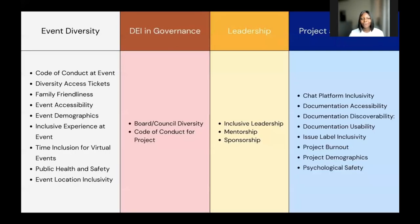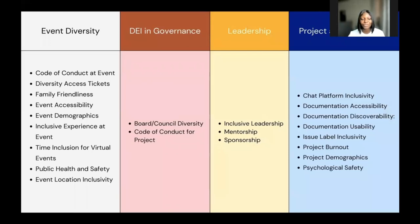Some of these metrics currently span across four different areas. For events diversity, communities and conferences that have gone through our DEI badging initiative will see that some of these come in handy for reviewing your projects. We have metrics like the code of conduct for events, diversity access tickets, which so many persons seem to be benefiting from today, family friendliness, event accessibility and demographics, inclusive experience at events for both speakers and attendees, time inclusion for virtual events, public health and safety for participants, and event location inclusivity.